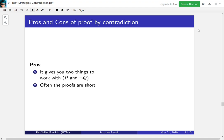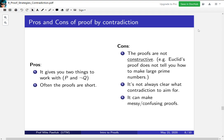There are some downsides to using proof by contradiction. The major one is that proofs by contradiction are not constructive. For example, in Euclid's proof of infinitely many primes, it doesn't actually tell you how to make large prime numbers, it just tells you that they have to exist.